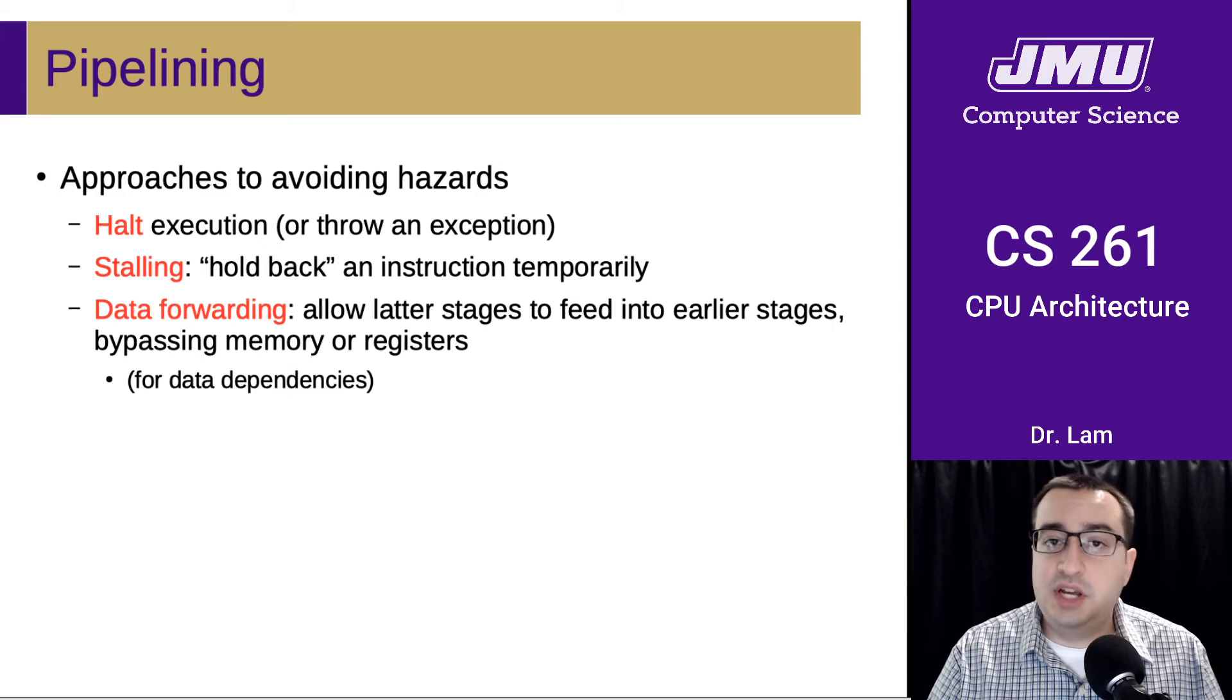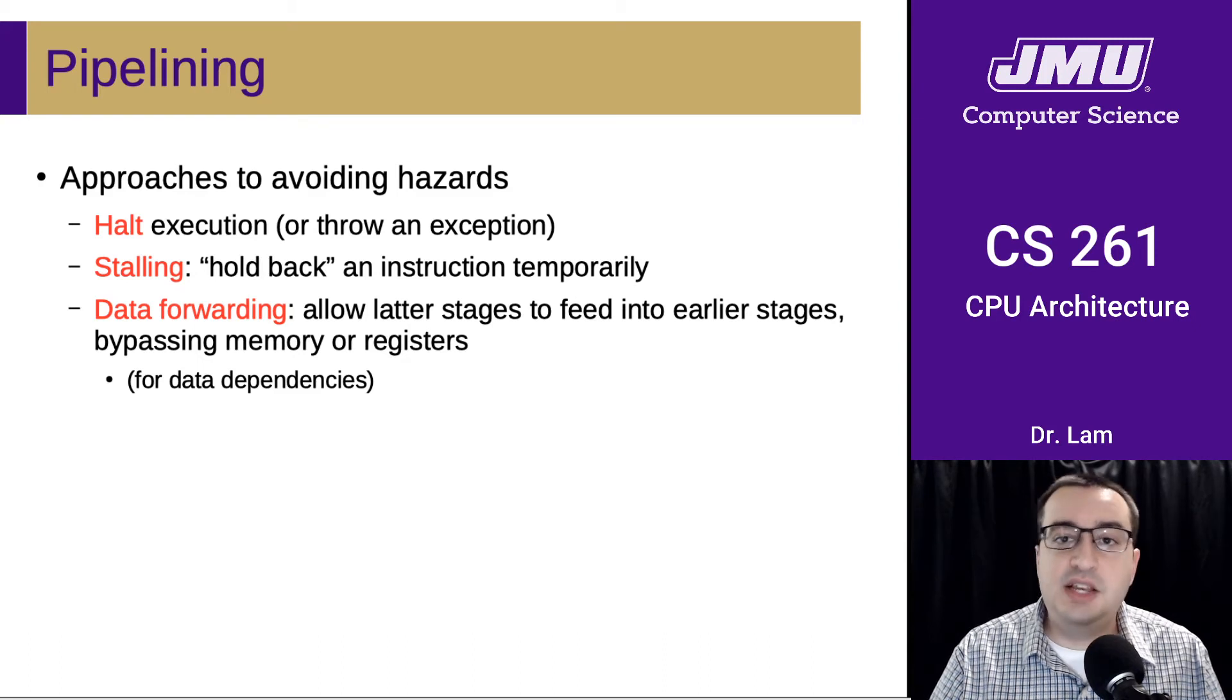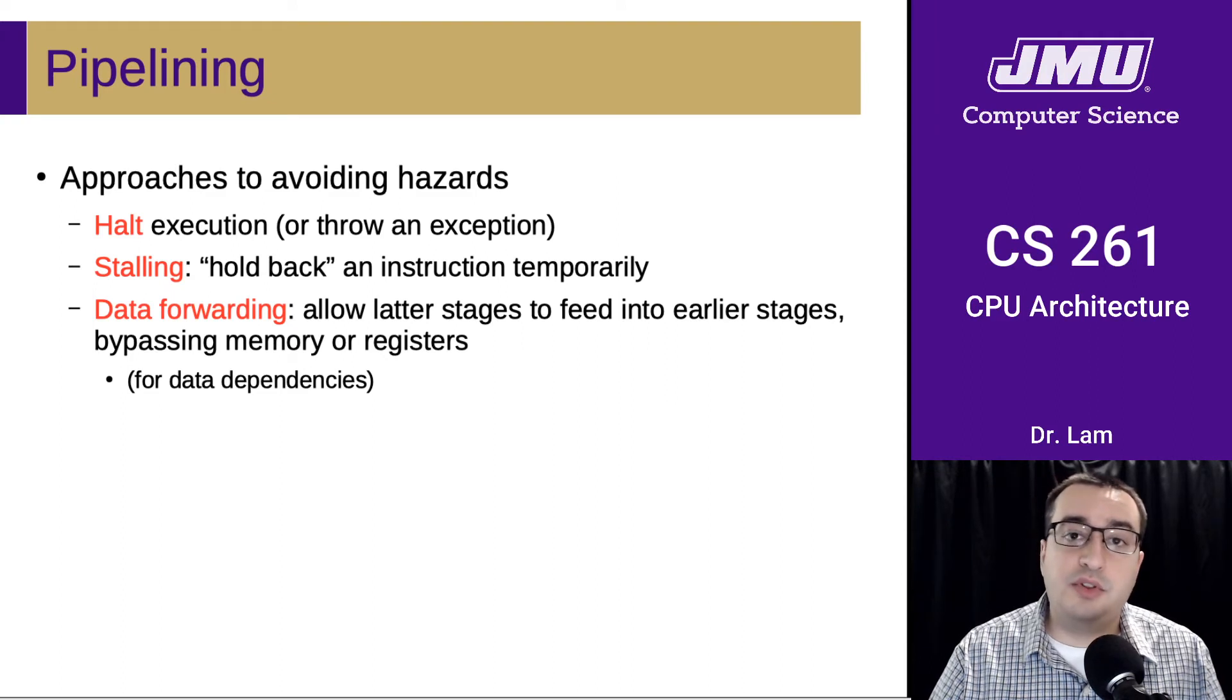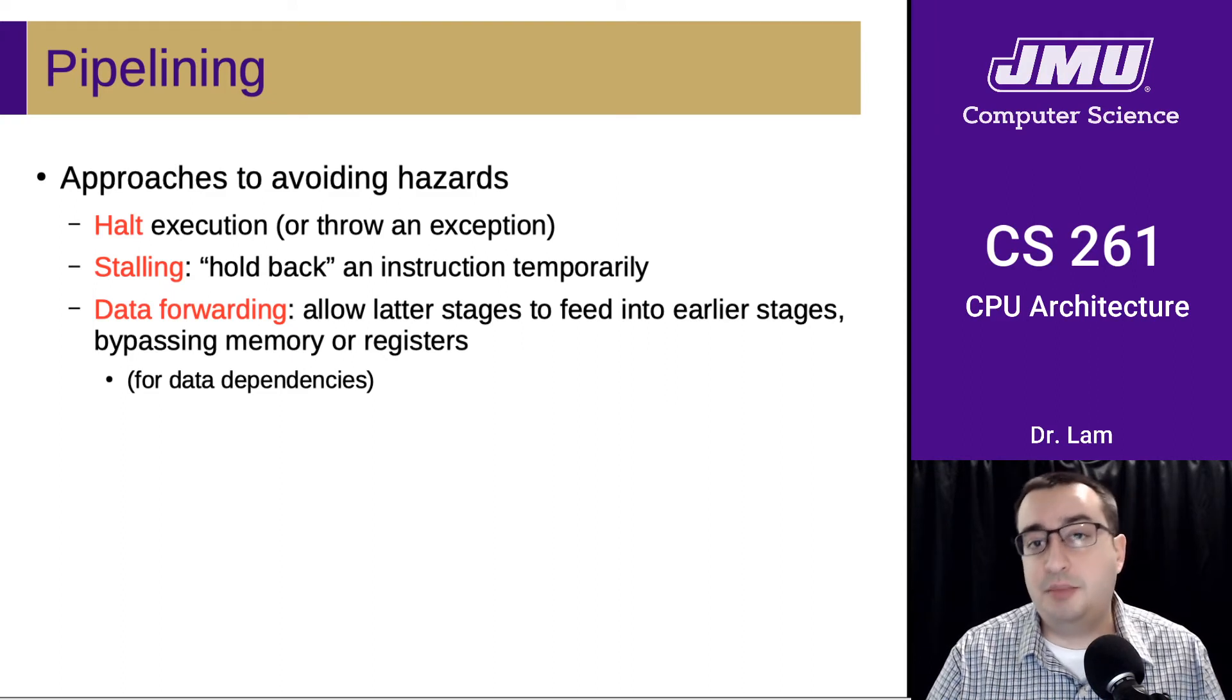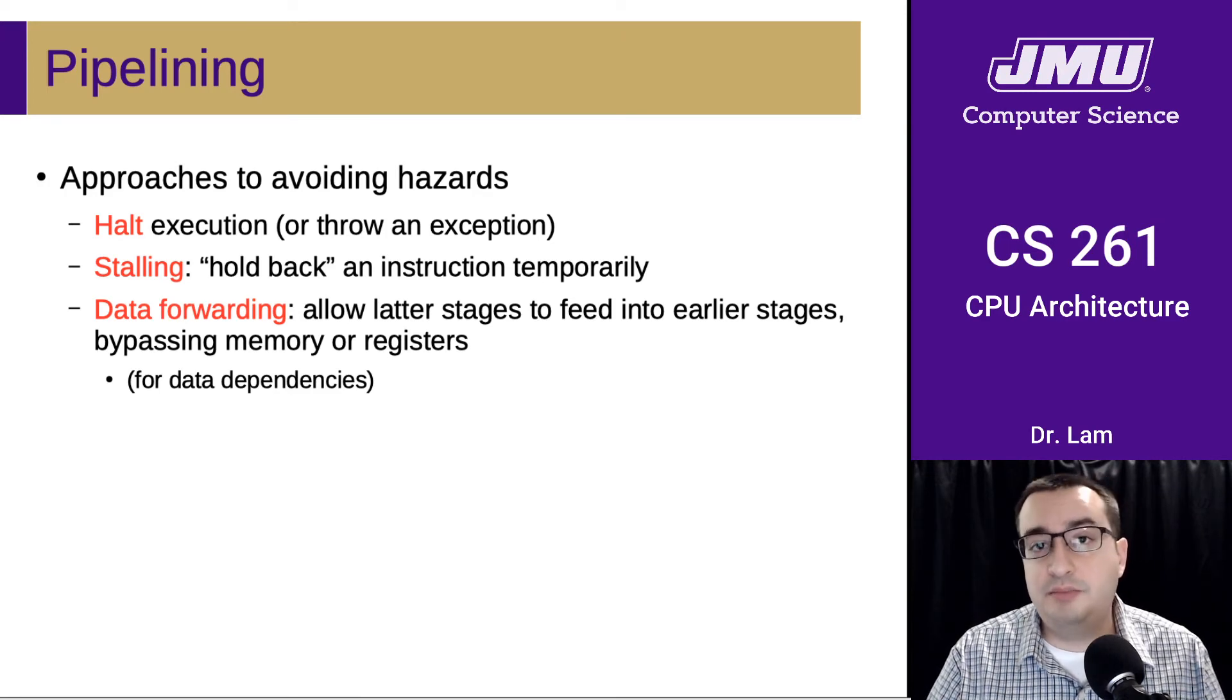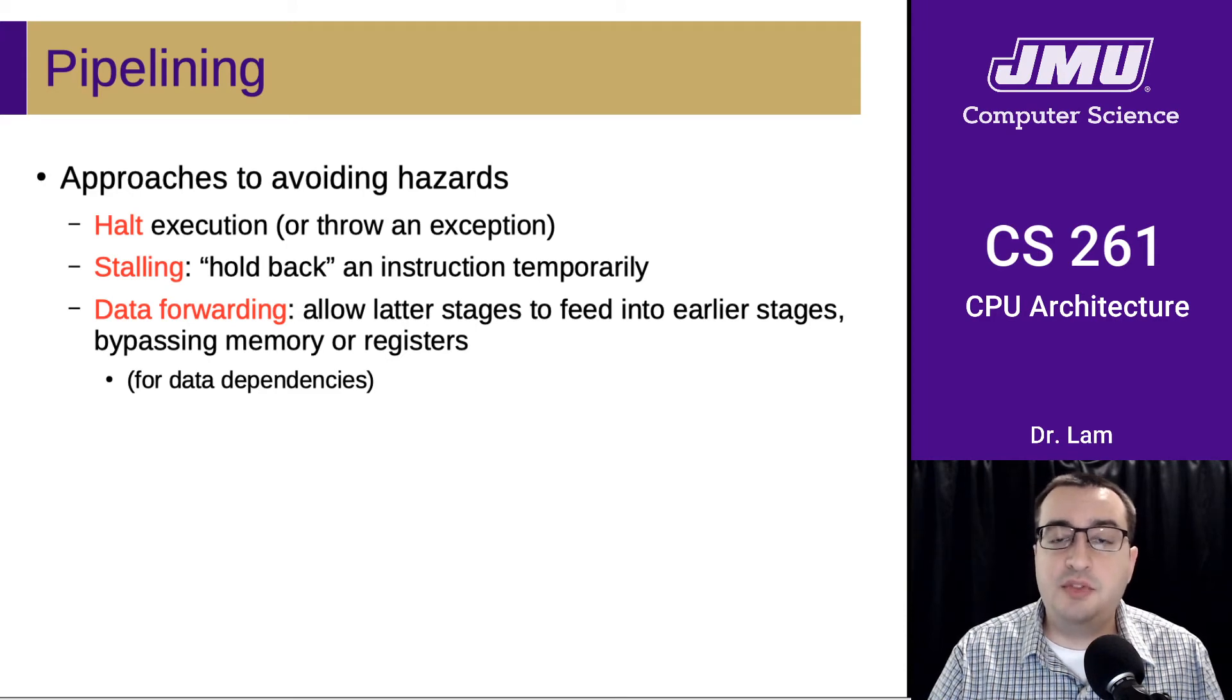Another thing you can do if you have a data dependency is something called data forwarding. This is a clever trick in CPU design that allows later stages to feed data back to earlier stages so that you can get results sooner than waiting for them to propagate to memory or registers. This is useful for data dependencies and allows things like the example shown on the previous slides to execute in pipeline even though some of the instructions need some of the results of a previous instruction.